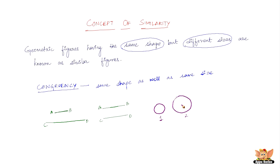Say we've got two triangles — triangle one and triangle two. Triangle one is definitely not similar to triangle two. Now if it is not even similar, it's definitely not going to be congruent either.